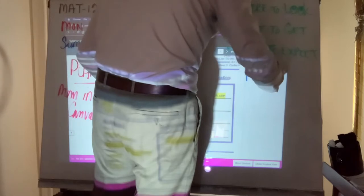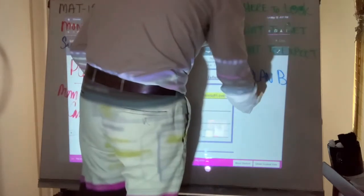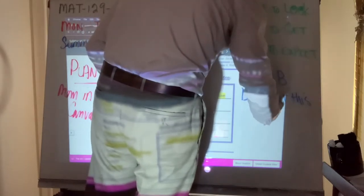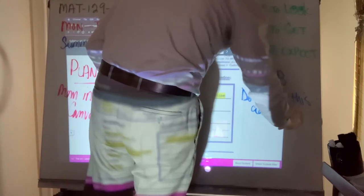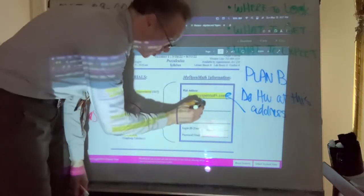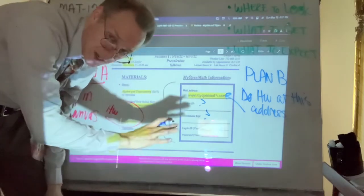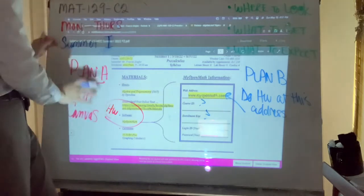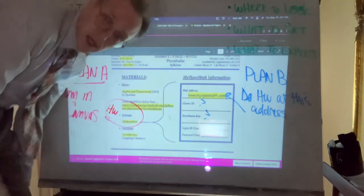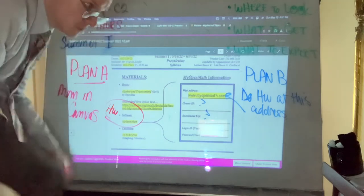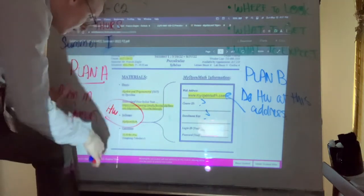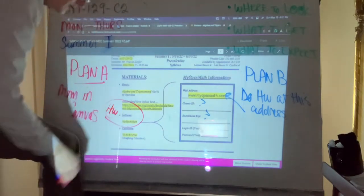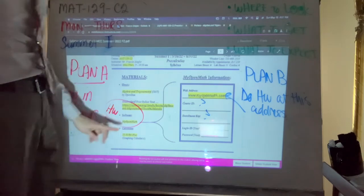Which is something I would prefer not to do, is that you do homework at this address. In that event, I would have to give you the course ID and enrollment key. I'm going to hesitate right now and not do that because Plan A is more practical. Just be patient. Your actual material will not begin until Tuesday anyway. Hopefully by tomorrow morning the e-learning tech people will help me synchronize these things.